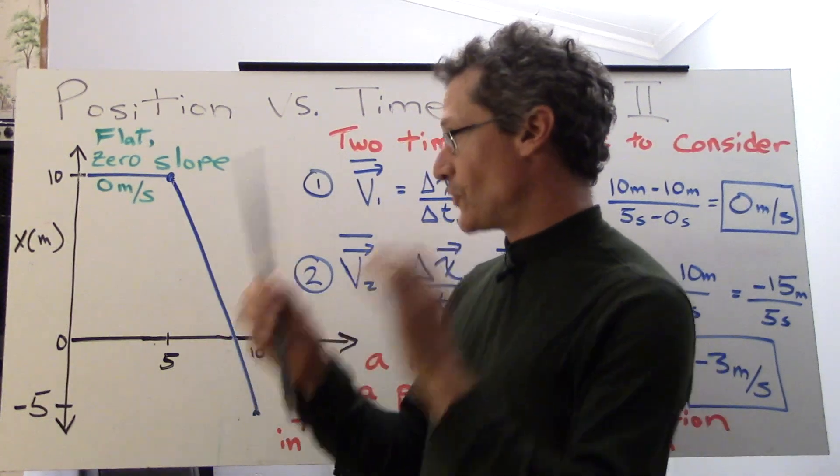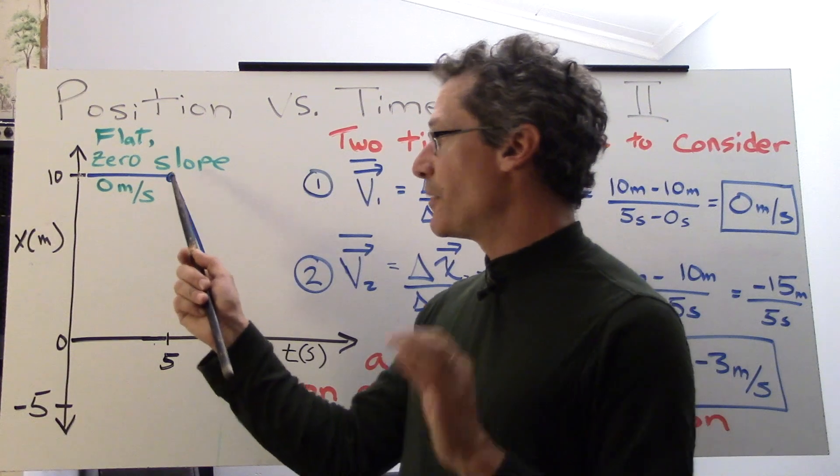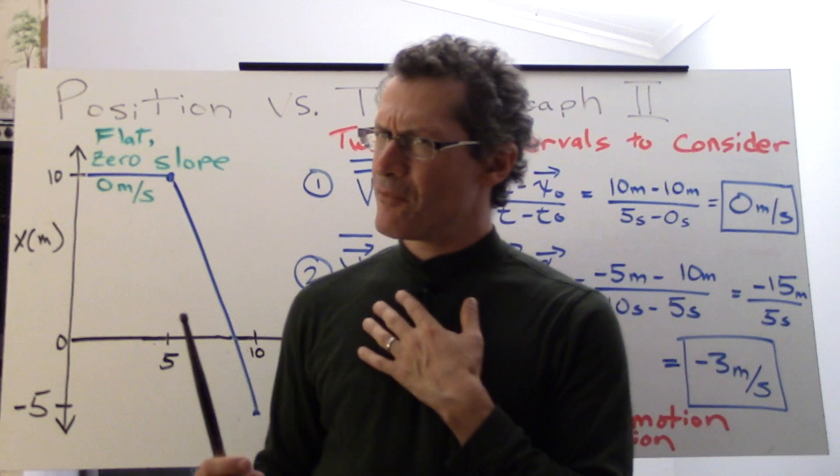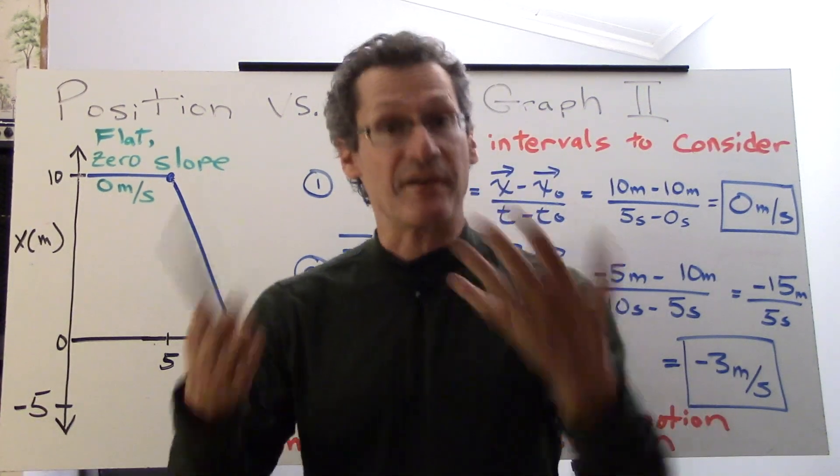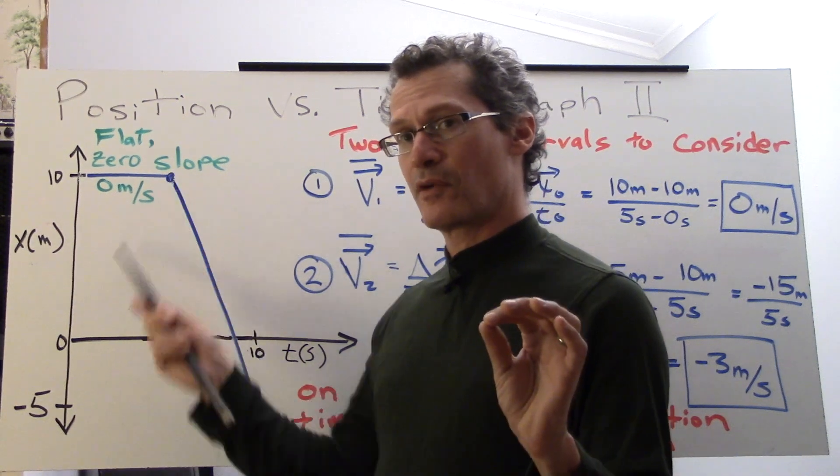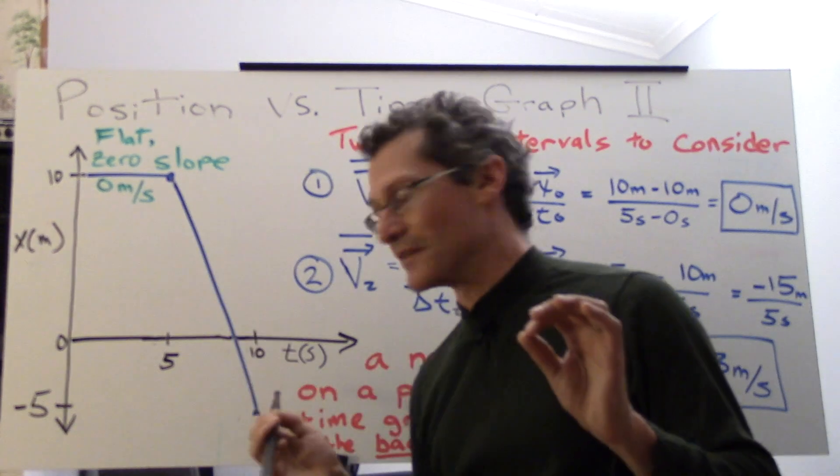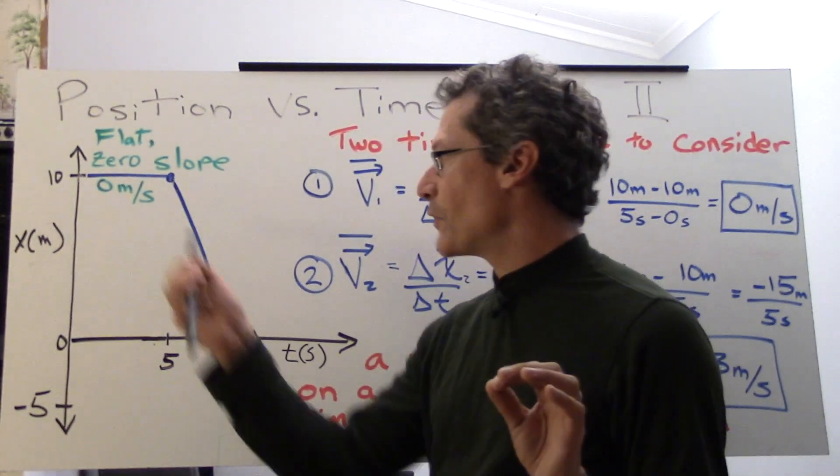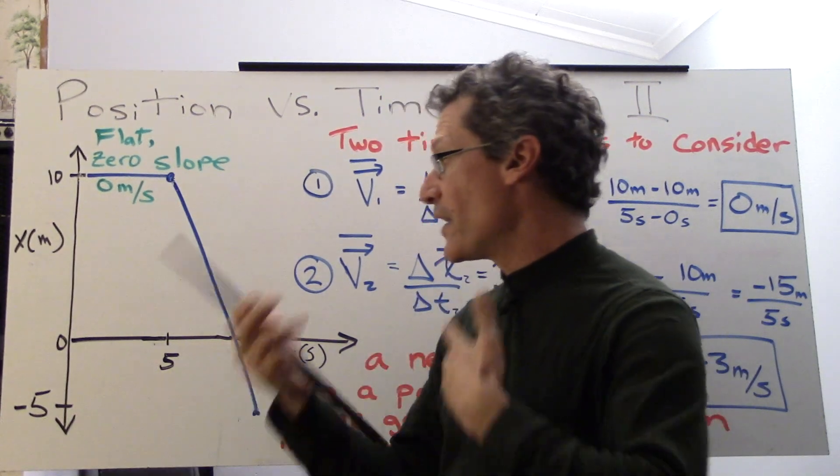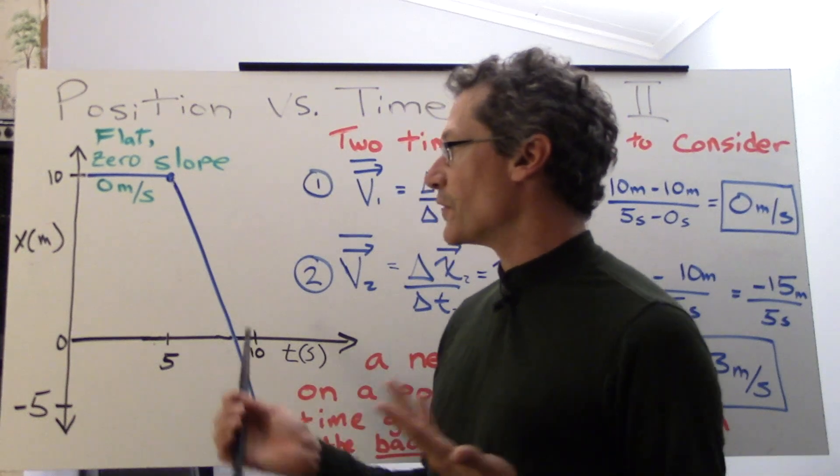Well let's look at phase number two. Phase number two goes from position 10 meters to position negative five meters. That means we probably, in fact not probably, we definitely have to be moving backwards. If we're moving from positive displacement position relative to the origin that means the displacement is going to be negative to get us down here. Okay and what we can see is that yeah this slope is moving this way, it's a negative slope so we're going to have a negative velocity and so let's look at the mathematics and see what happens for a value.